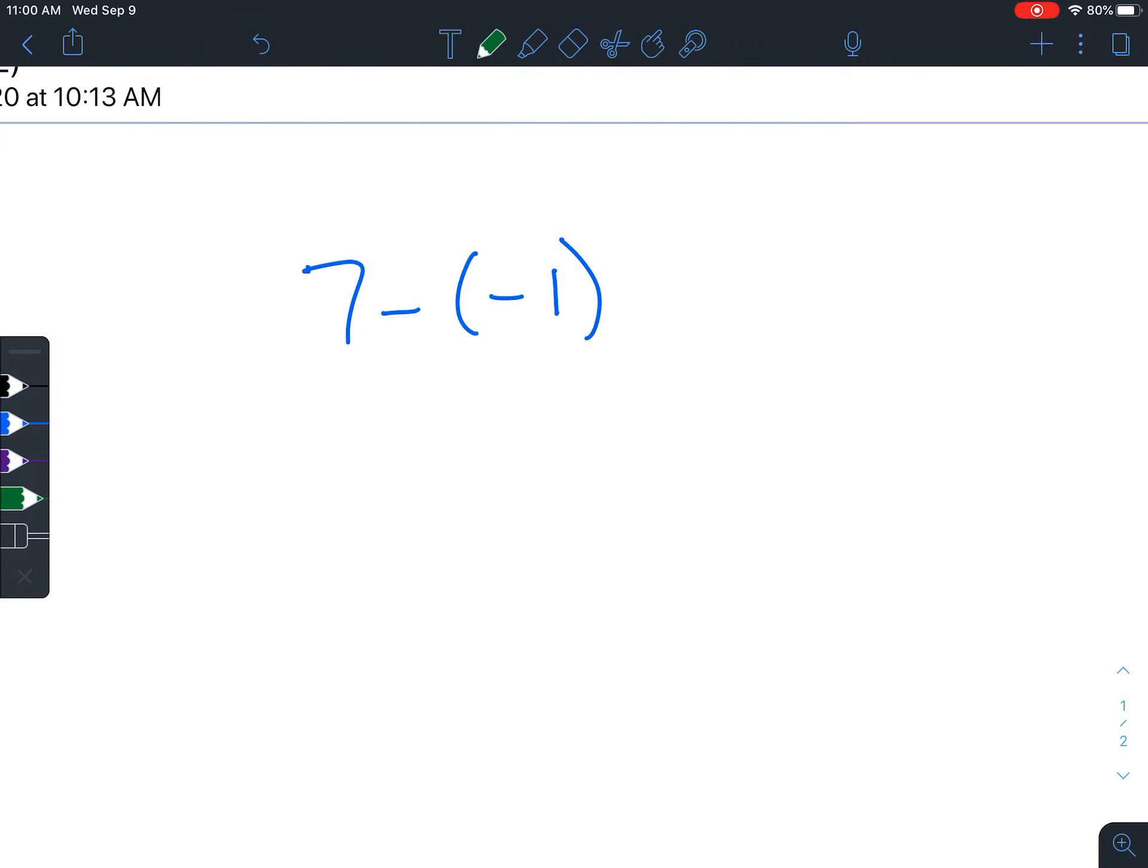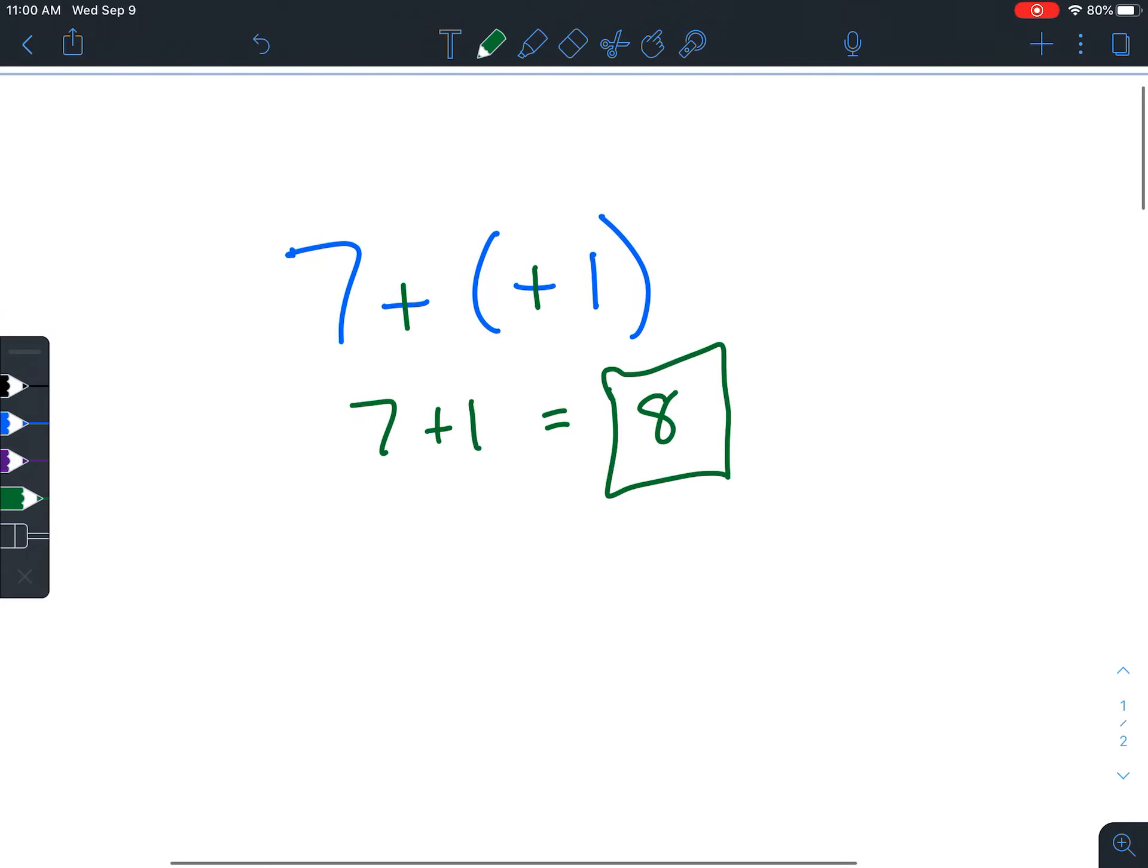Okay, so the way you want to tackle this problem is to change it to add the opposite. You're going to say no to subtraction. Okay, so we've got plus a positive, and then it turns into regular old 7 plus 1, which is 8. And so if you can set that up right, then it's actually a relatively easier problem. It's just remembering to set it up that way.